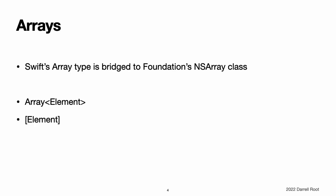Arrays. An array stores values of the same type in an ordered list. The same value can appear in an array multiple times at different positions. Note: Swift's array type is bridged to Foundation's NSArray class. For more information about using array with Foundation and Cocoa, see Bridging Between Array and NSArray.